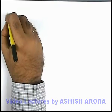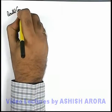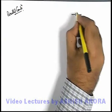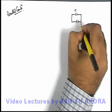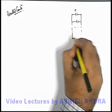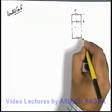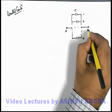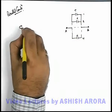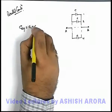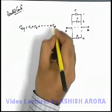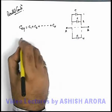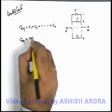Similar to series combination, if we talk about the parallel combination of n identical capacitors, the situation would be like this: all capacitors are identical and connected one after another in parallel — say 1, 2, up to n. In this situation, across terminals A and B, the equivalent capacitance is given as C1 plus C2 plus up to Cn. As all capacitors have capacitance C, they all add up and the equivalent capacitance can be written as nC.